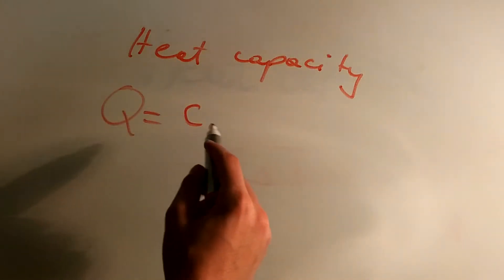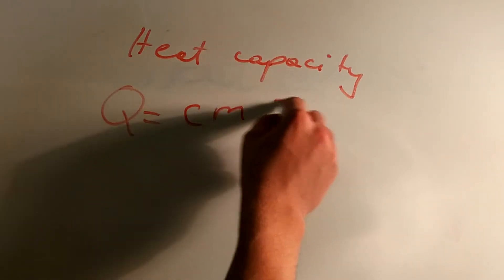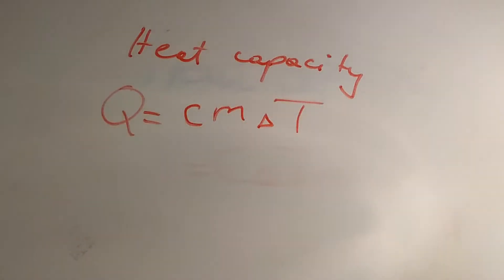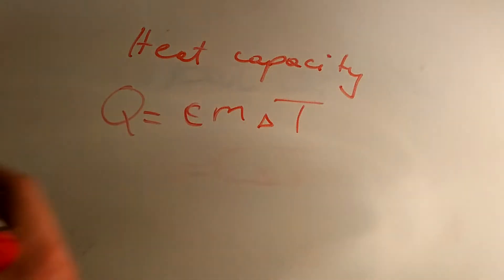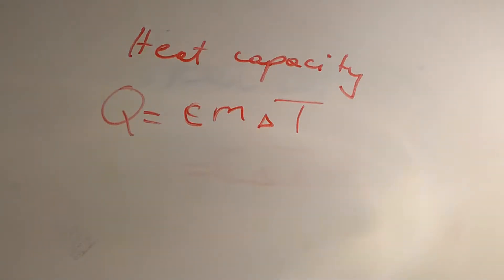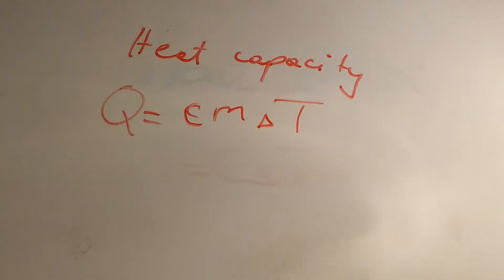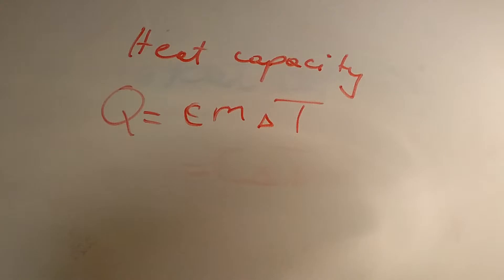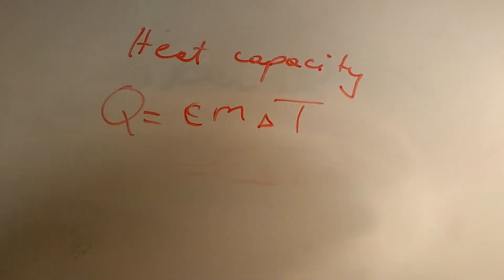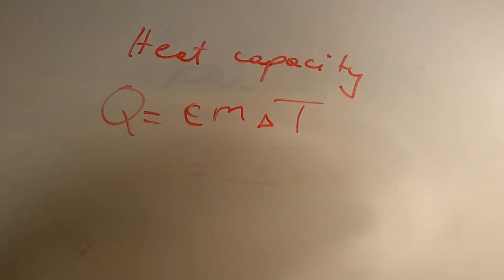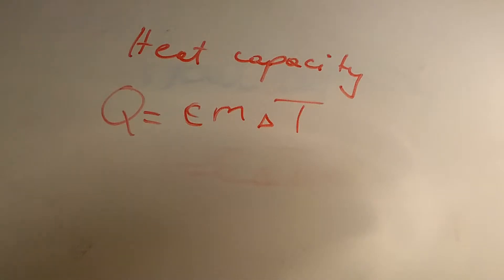This gives us the formula Q = m × c × ΔT. If the heat capacity is bigger, that means we need more energy to raise a certain amount of that substance by a certain temperature. For example, if we have 0.5 kg of water and want to increase the temperature by 3 degrees Celsius, using the specific heat of 4186 J/(kg·°C), we get 6.28 × 10³ joules.